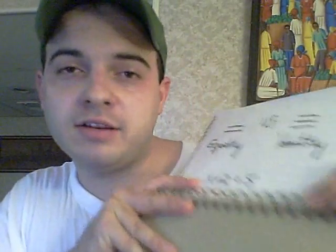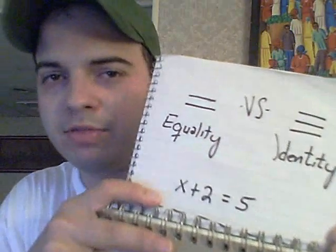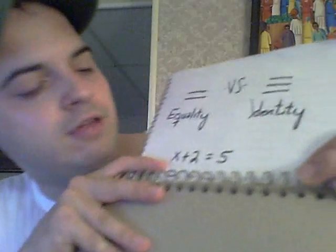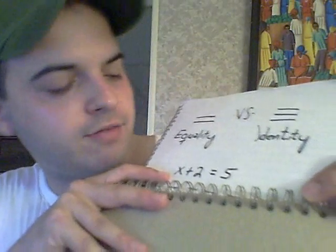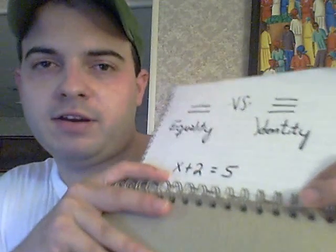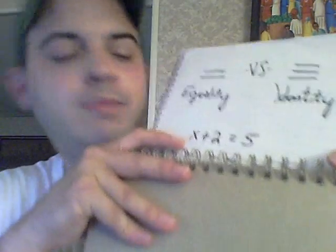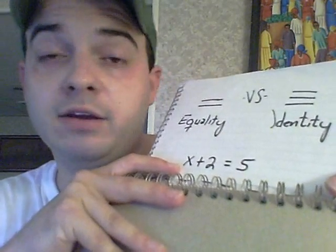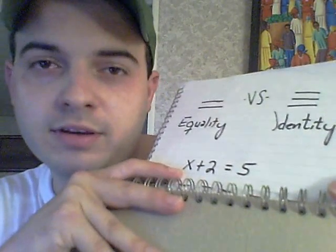The triple equal sign is used for definitions. For example, x plus two equals five — this is used to find a specific case when x plus two is equal to five. It doesn't mean that x plus two and five are the same thing. You wouldn't say that x plus two always equals five throughout your life — that's not right. You couldn't view these two as identical functions; x plus two is a different function than five.